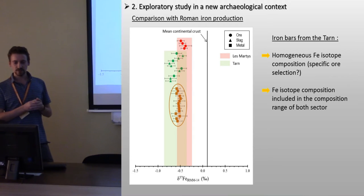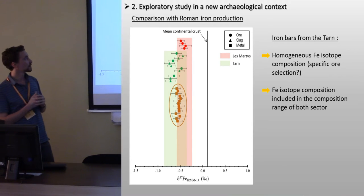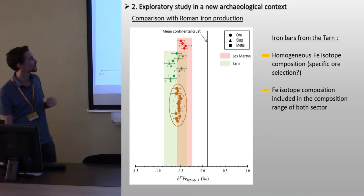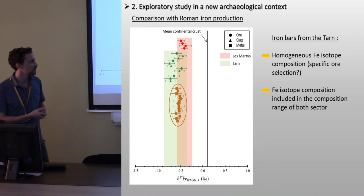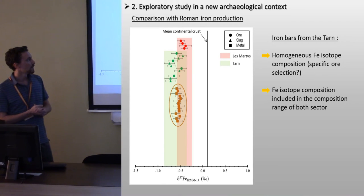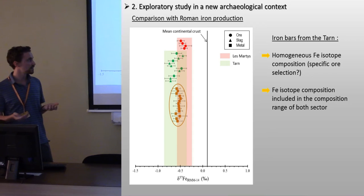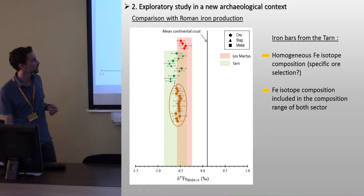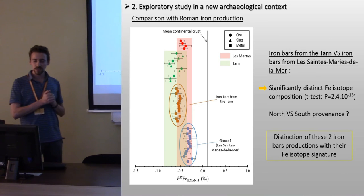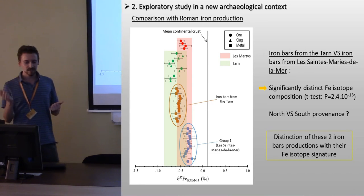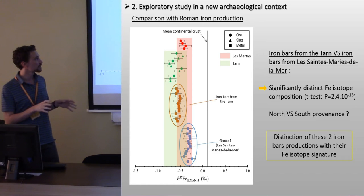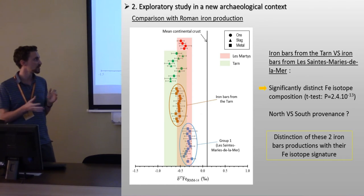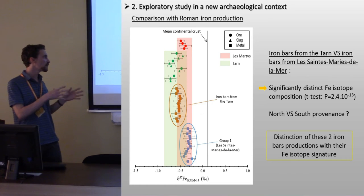We then compared the composition of iron bars from the Tarn with that of materials from both the northern and southern sectors. First, we can see that these bars have a homogeneous isotopic composition, which may reflect the choice of a specific ore. We compared the composition of these bars with that of the bars produced in the Montagne-Noire, and we can see that these two productions have a significantly distinct iron isotopic composition, which may reflect different provenance.